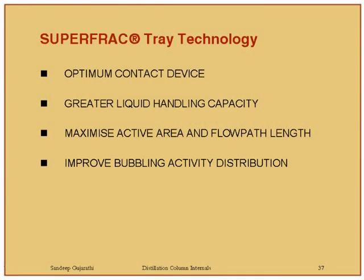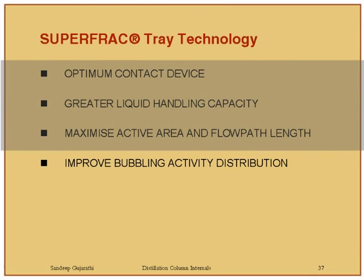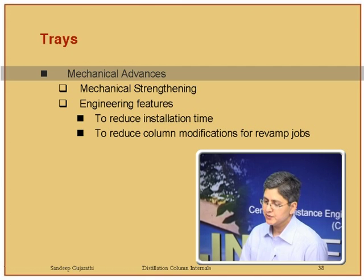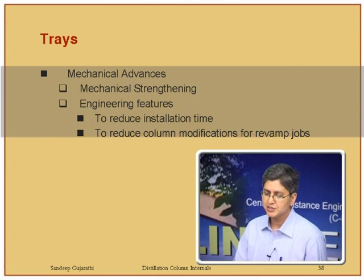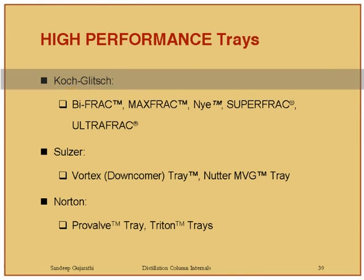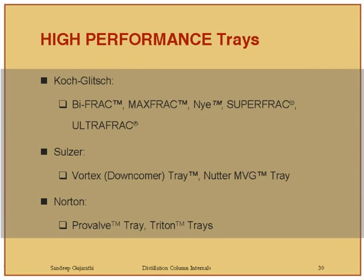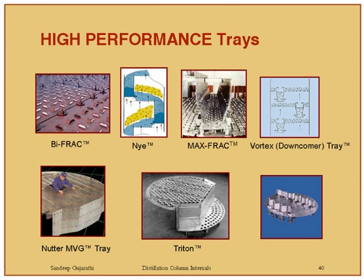This is the SuperFrac technology developed by Koch-Glitsch, incorporating optimum contact devices, greater liquid handling capability, maximized active area and flow path length, and improved bubbling activity distribution. There are also mechanical advances for reduced installation time and column modification during revamps. High performance trays available in the market include from Koch-Glitsch: BiFrac, MaxFrac, Nye, SuperFrac, UltraFrac; from Sulzer: Vortex Downcomer tray, Nutter MVG tray, MVG plus; and Norton (now part of Koch-Glitsch): ProValve and Triton trays. SuperFrac covers a very large operating regime, while Nye and Triton are suited for specific mixed operating ranges.